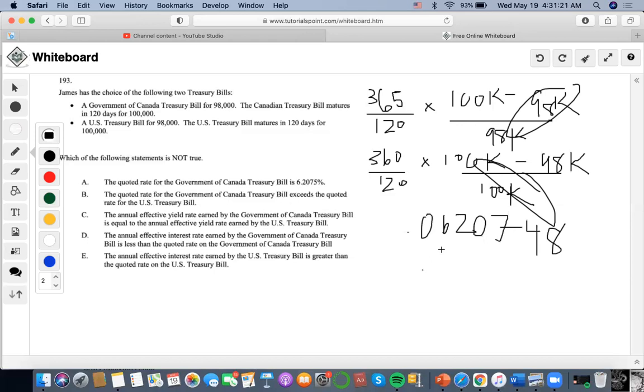And get 0.06 is the quoted rate. Okay, so let's look at our answer choices. Quoted rate for the Canada is, yep that's true. Quoted rate exceeds the quoted rate for US, yep that's also true. Now they're talking about annual effective yield rates.